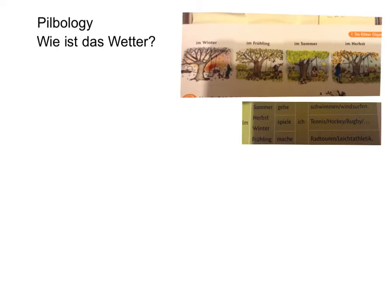We've already learned to say it's nice, it's sunny - es ist schön, es ist sonnig, es ist kalt, es ist heiß. And there are many other ways of describing the weather, which we can go back to and look at as revision.